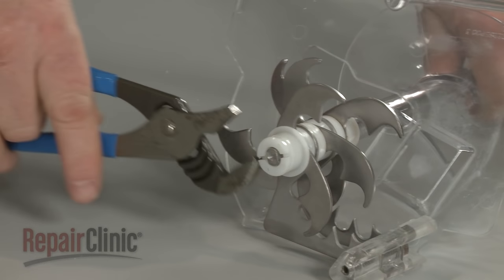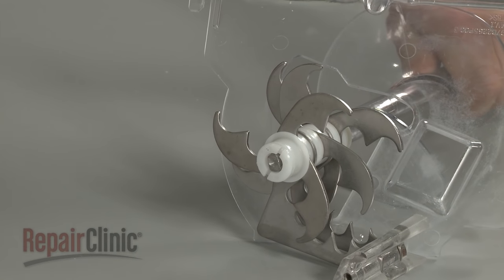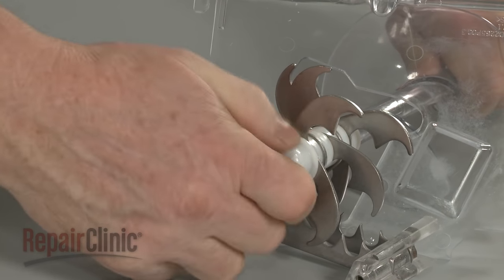Use an adjustable wrench to loosen the bearing retainer by rotating it clockwise. Unthread the retainer.